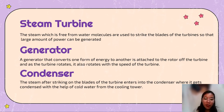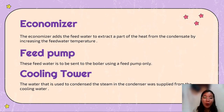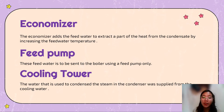Next is the condenser. The steam after striking on the blades of the turbine enters into the condenser where it gets condensed with the help of cold water from the cooling tower. The next one is the economizer. The economizer preheats the feed water to extract a part of the heat from the flue gases by increasing the feed water temperature.